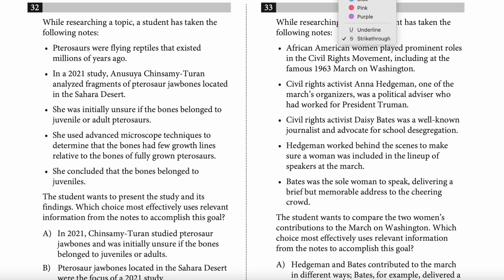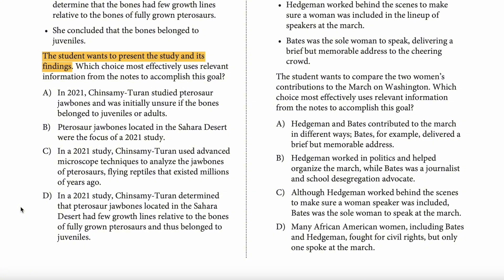The right answer is going to present the study and its findings — that's it. Let's read answer choice A: 'In 2021, studied pterosaur jaw bones, and was initially unsure if bones belong to juveniles or adults.' Does answer choice A present the study and its findings? No — where does it present the study? It tells us what he studied, but there's nothing about findings. It says he was initially unsure if the bones belong to juveniles or adults, but there are no findings. It barely presents the study. It's not answer choice A.